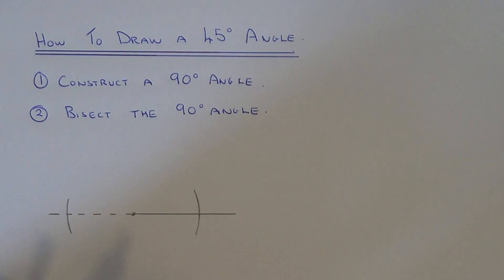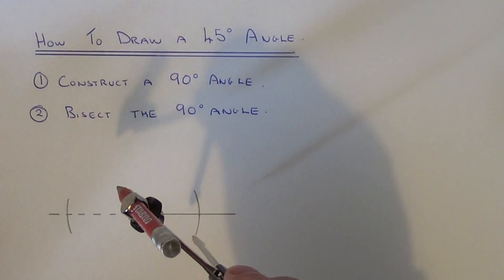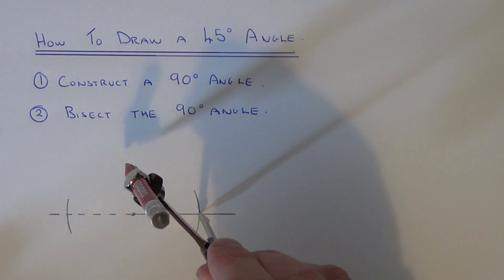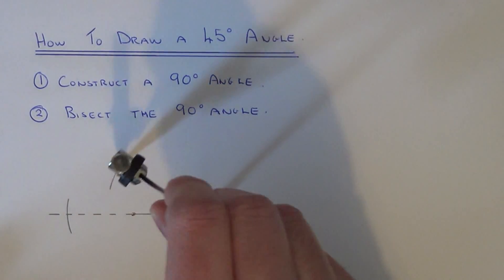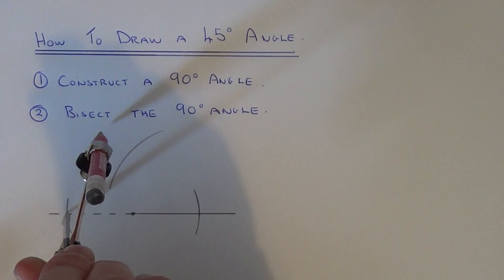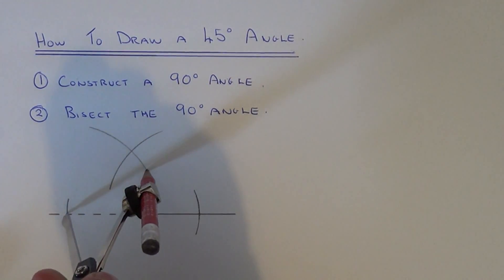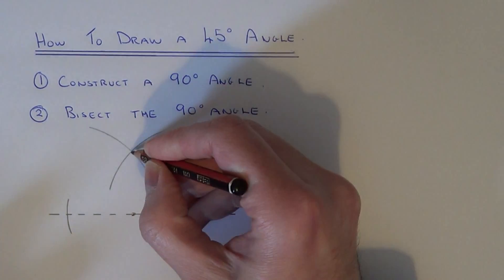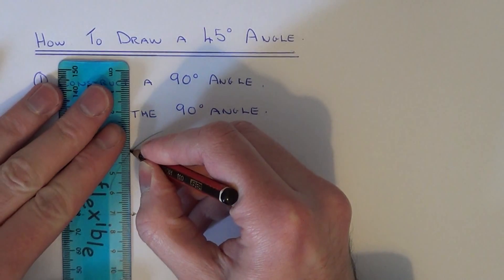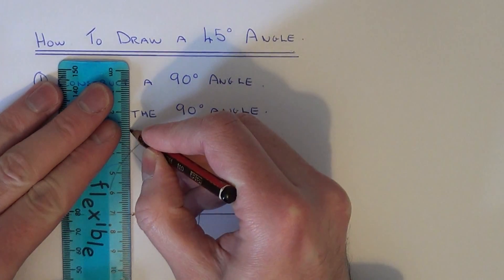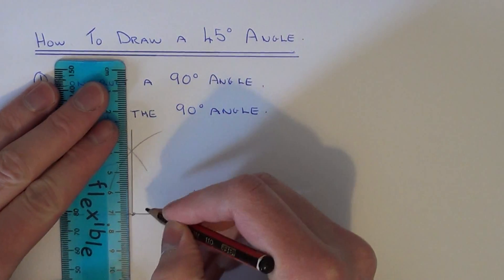Now extend your compass a little bit further and do two more arcs. If you join this intersection point back to the point on the line, this will be the 90-degree angle.